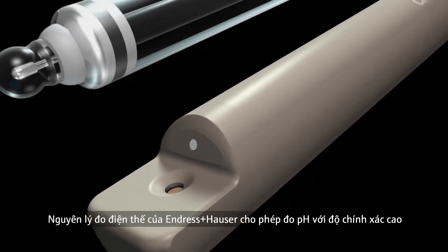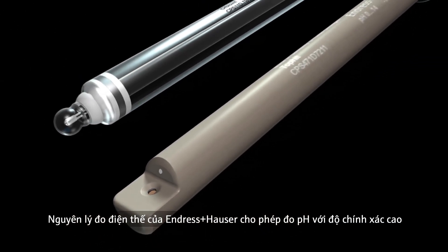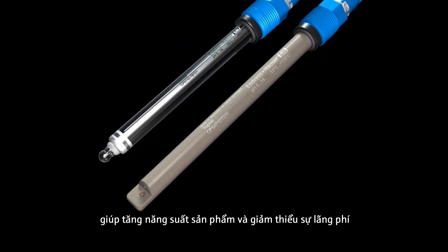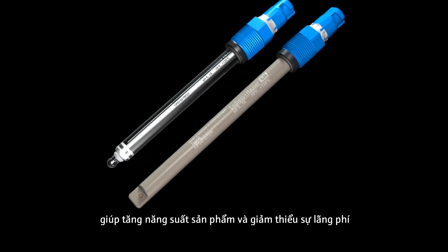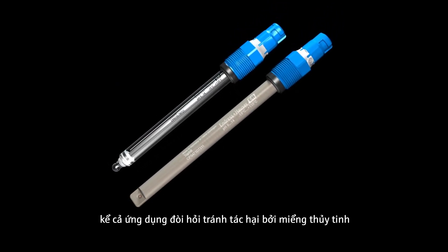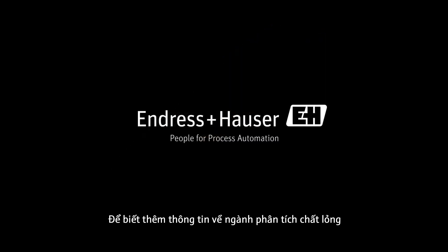The potentiometric measuring principle by Endress+Hauser enables highly accurate pH measurement for better product yields and less waste. We offer a solution for all applications, even in those industries that do not tolerate glass. For further information on liquid analysis and the latest pH sensor generation featuring Memosens technology, visit the Endress+Hauser YouTube channel or www.endress.com.